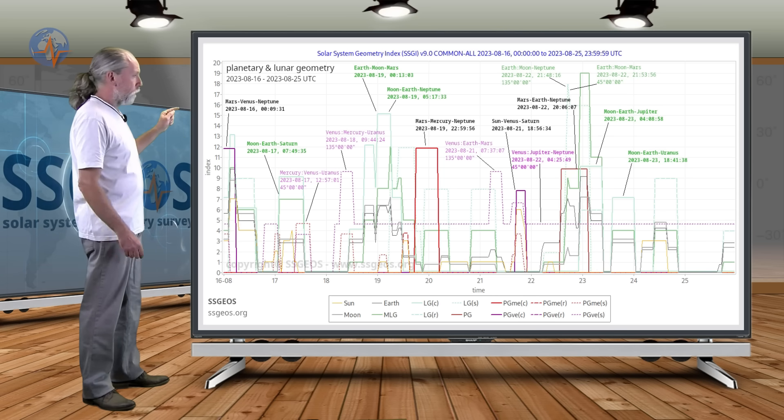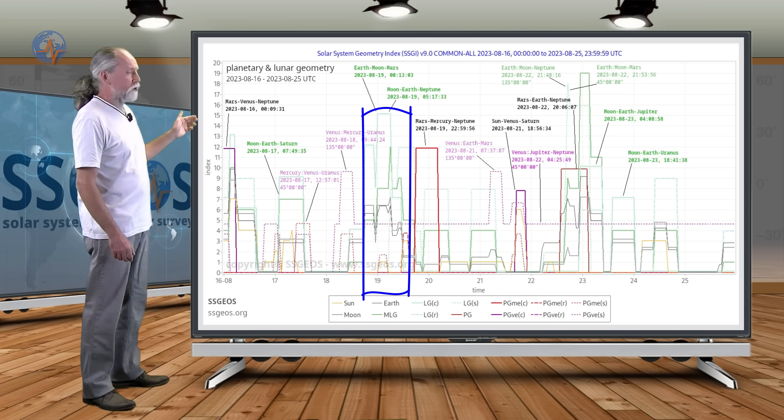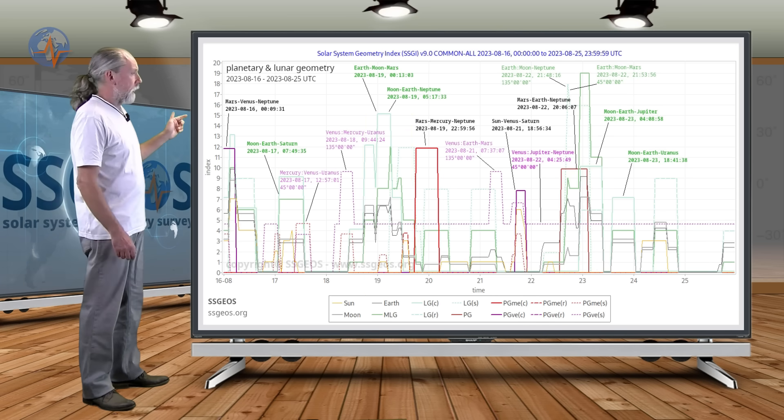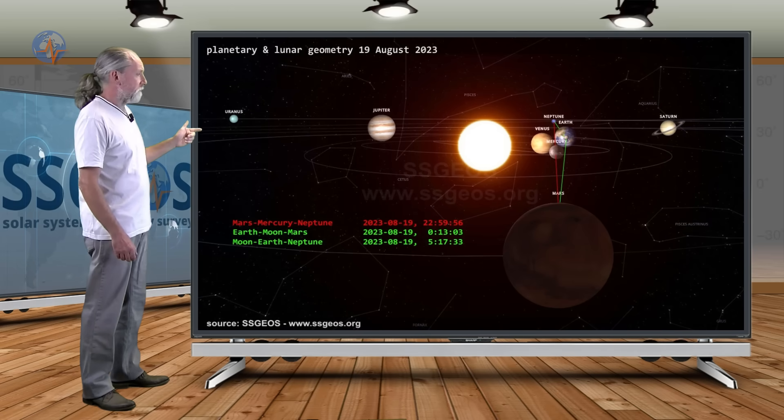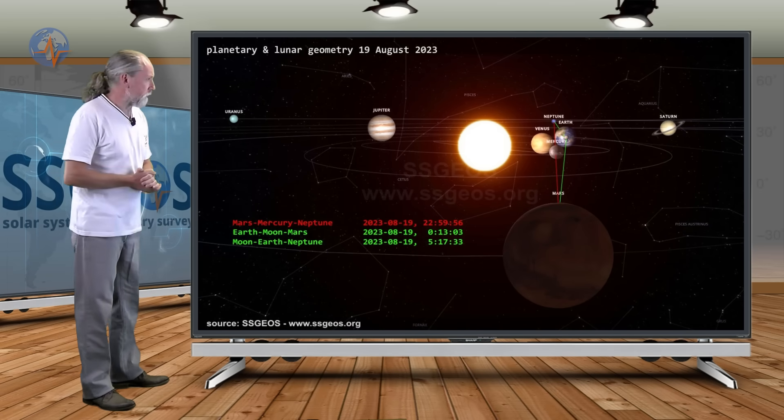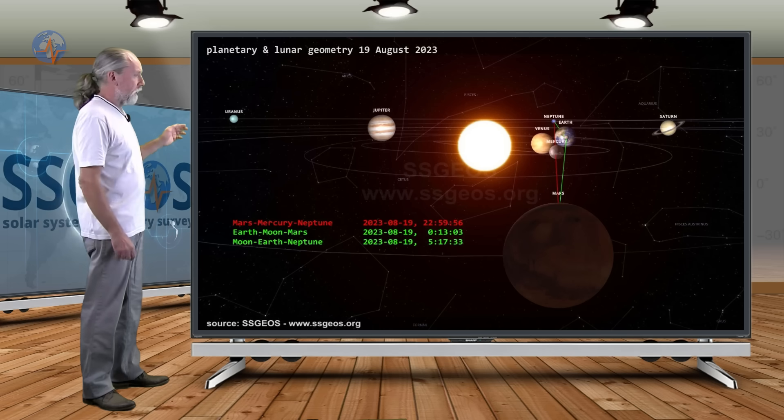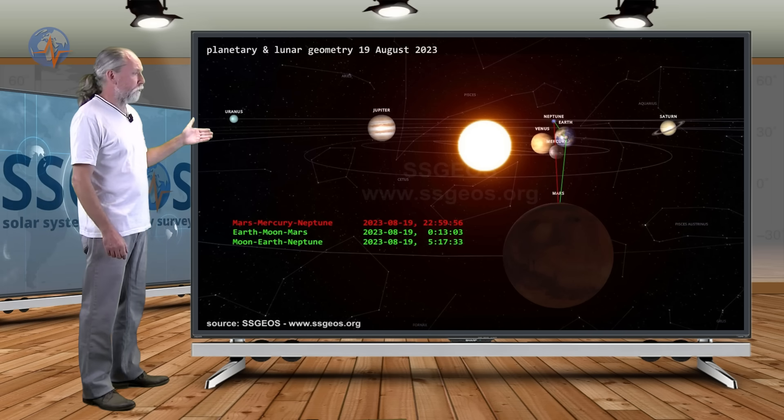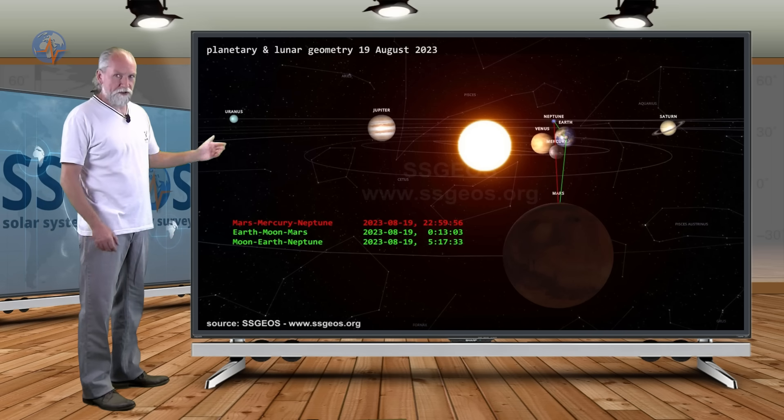Most critical will be when the Moon will be in conjunction with Mars and Neptune. And that will be on the 19th. And there will only be about five hours in between. That's going to be critical because it almost converges with Mars-Mercury-Neptune later on the same day.